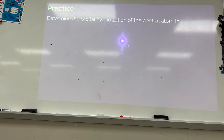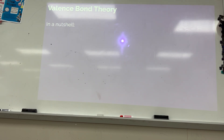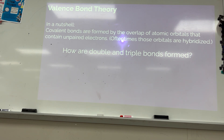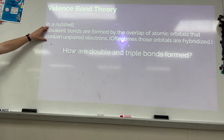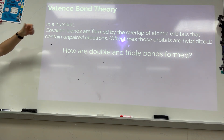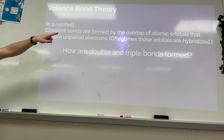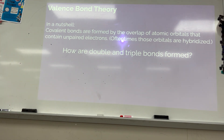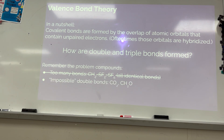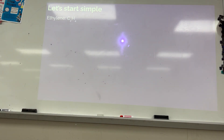Today we need to answer this question: how do I make double bonds and triple bonds using hybrid orbitals? We made single bonds in the previous lesson, but now we need to make multi-bonds. Our hypothesis is still that covalent bonds are formed when I overlap atomic orbitals with unpaired electrons — sometimes the orbital is a hybrid — but how do I make double and triple bonds?